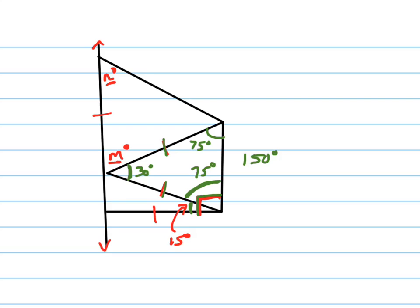If this one is 15 right there, that's 15. These two have to add up to, and notice these are equal because those are, remember, if you have an isosceles triangle.